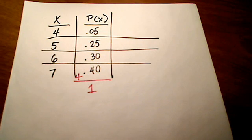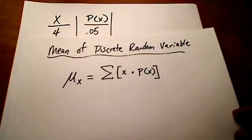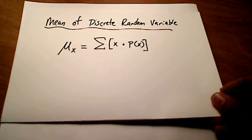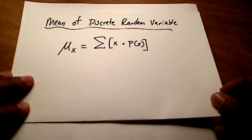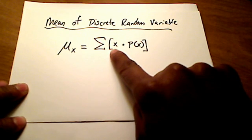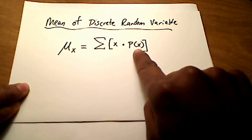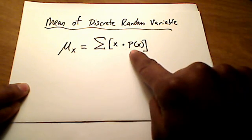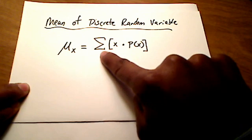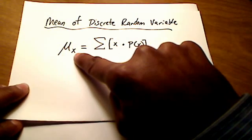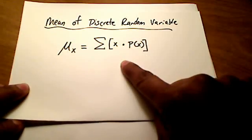Now that we've verified that, here is the formula to find the mean of a discrete random variable. This is probably shown somewhere in your book, or your professor has shown it in class, or it's on a formula sheet. The way this works is you take each x value, each random variable, multiply it by its probability. You do that for each x and its probability, and then you add up all of those products — that's what the summation, the capital sigma, means. That gives us the mean of the random variable x.